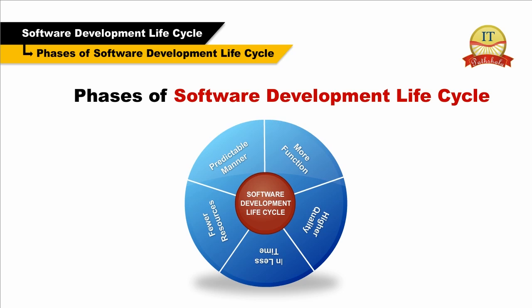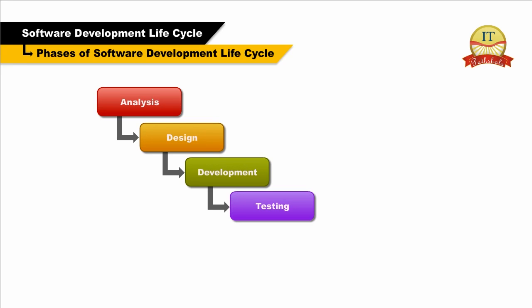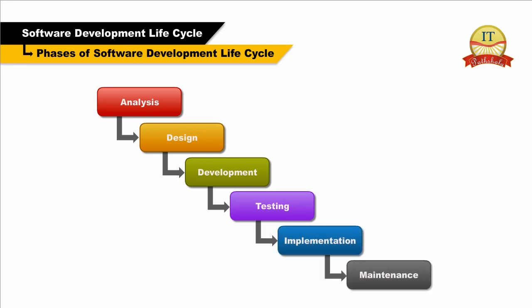Every software development lifecycle model consists of all or some of the following six phases: Analysis, Design, Development or Coding, Testing, Implementation, and Maintenance.